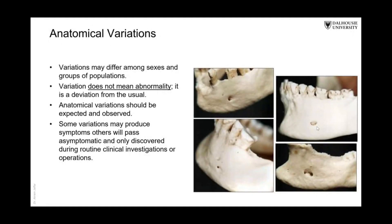One important thing when you study anatomy is that the body is not a template. The body develops, the body grows, and there are variations that take place during development — variations due to sex, due to race. All of these should be kept in mind when you see a variation. It doesn't mean that it is abnormal, but it is unusual. Most pictures in your textbooks or atlases usually refer to the usual condition or usual appearance of a structure.